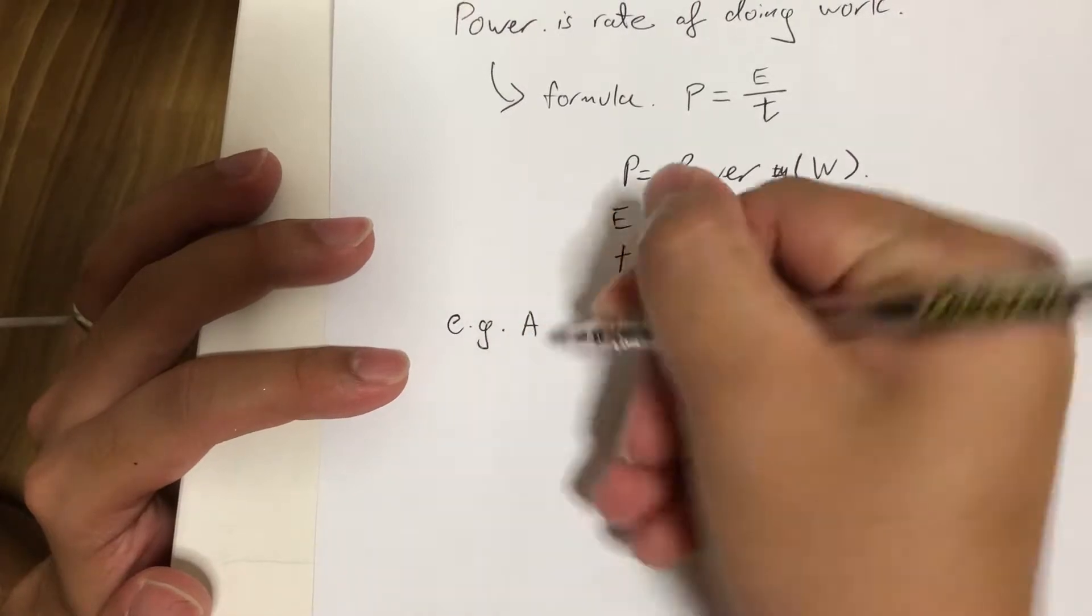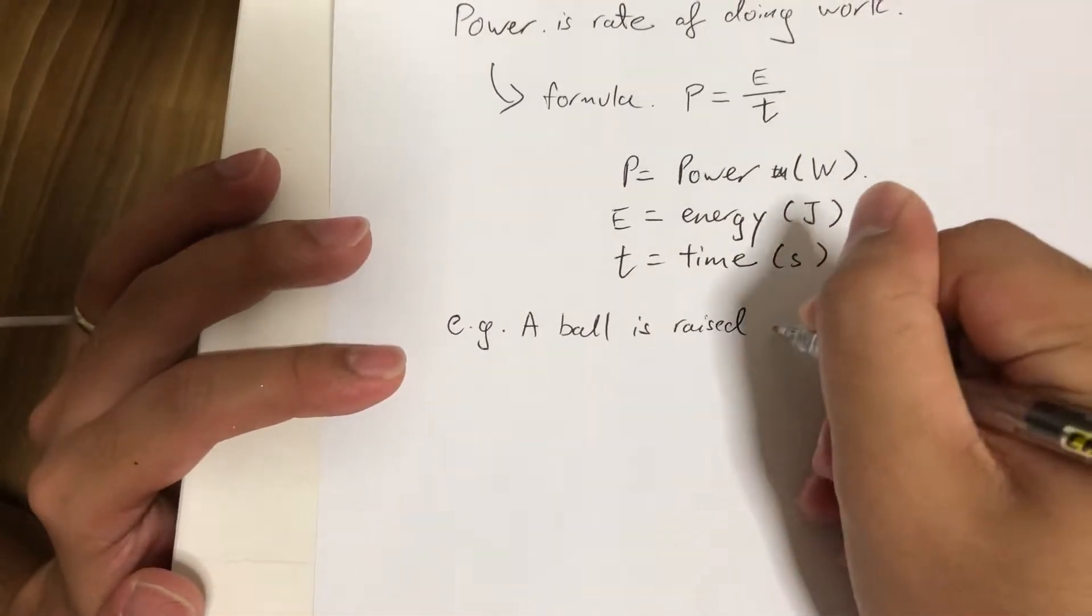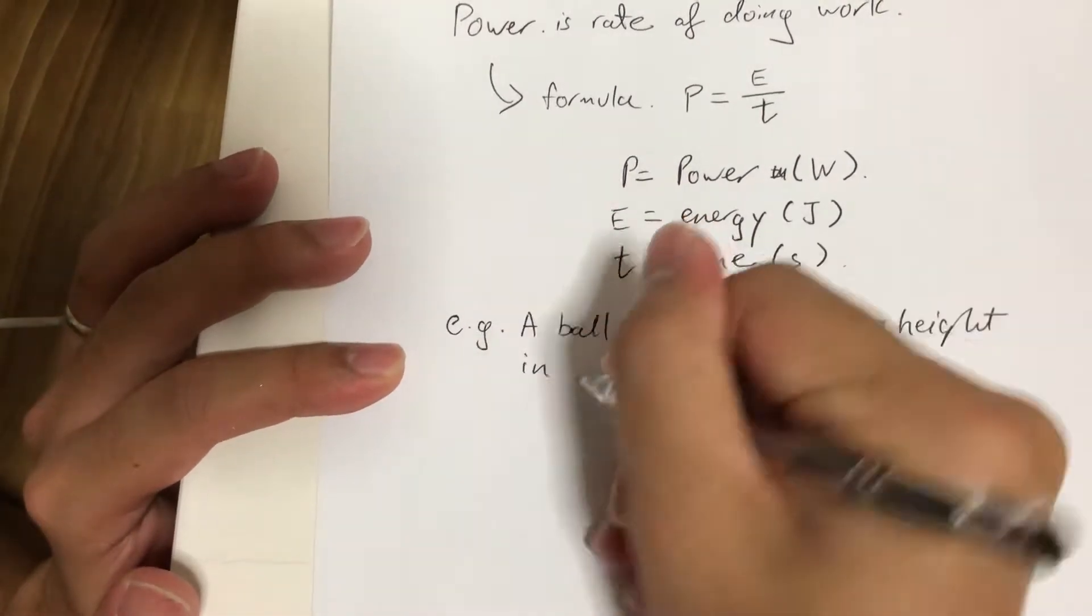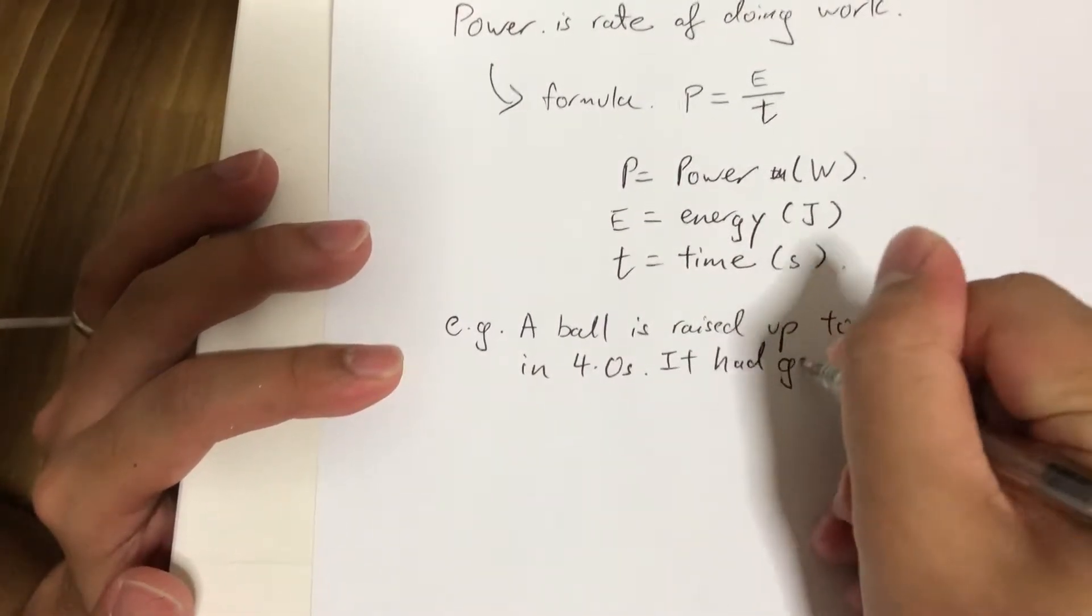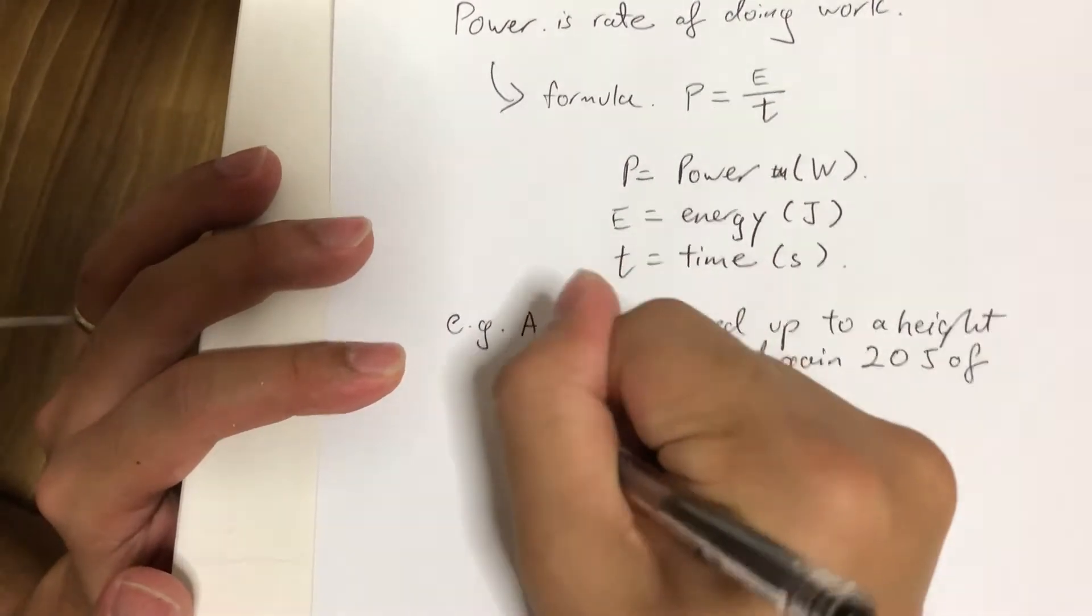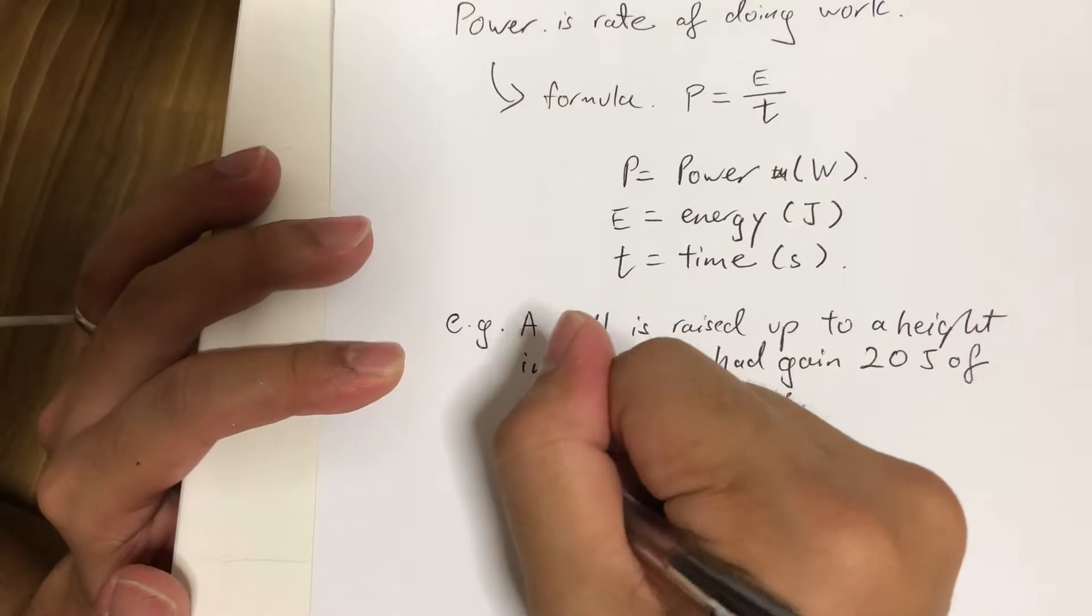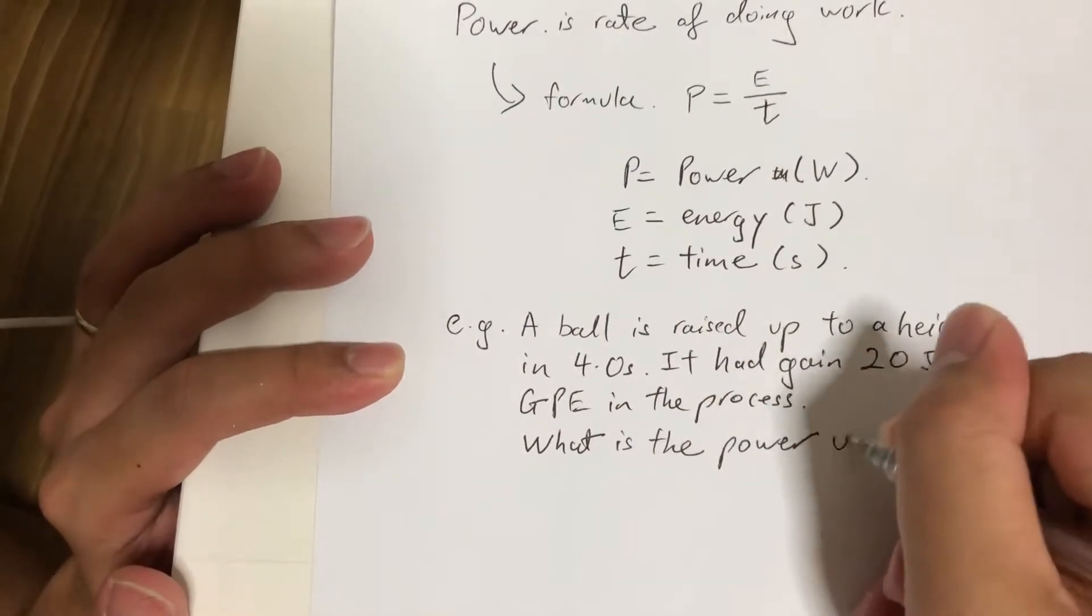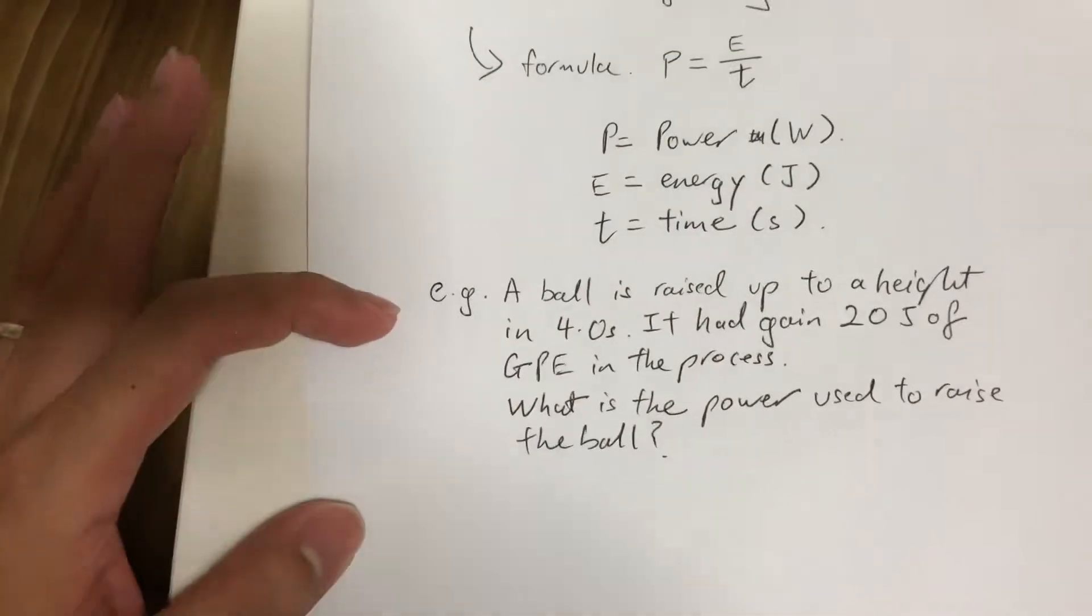A ball is raised up to a height in four seconds. It had gained 20 joules of GPE in the process. What is the power used to raise the ball? Okay, very simple question. You will try it now.